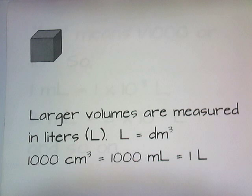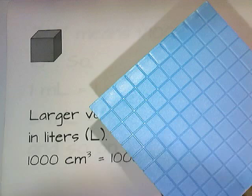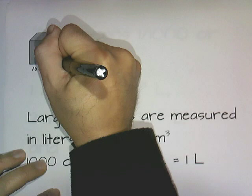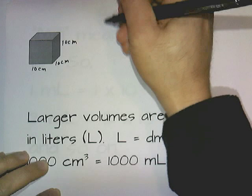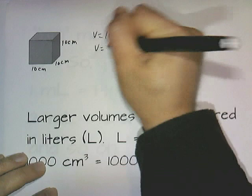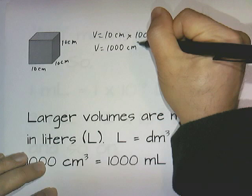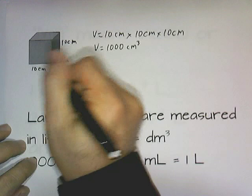If we want to measure even larger volumes, we use the liter. The way they came up with a liter is they took a bigger box with dimensions of ten centimeters by ten centimeters by ten centimeters. The volume is ten centimeters times ten centimeters times ten centimeters — ten times ten times ten is a thousand — so that's one thousand cubic centimeters.